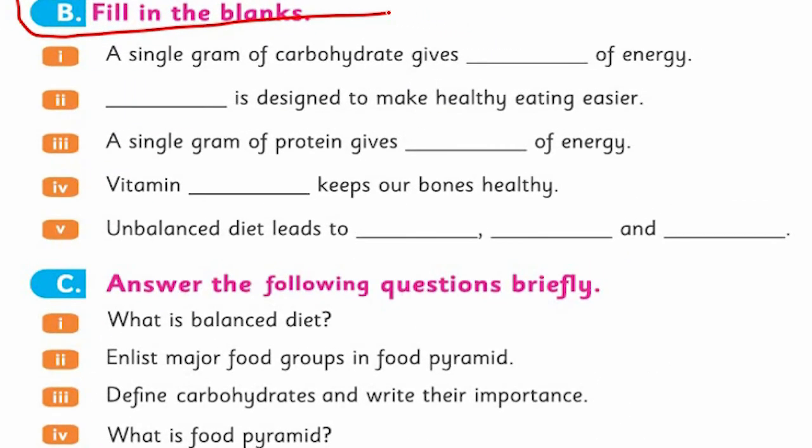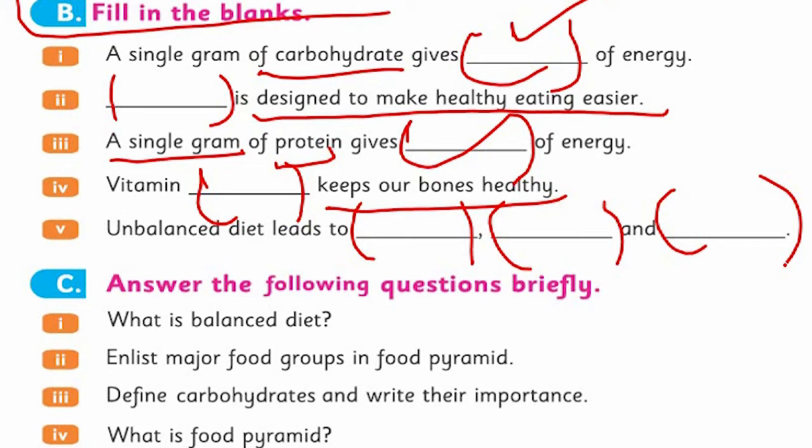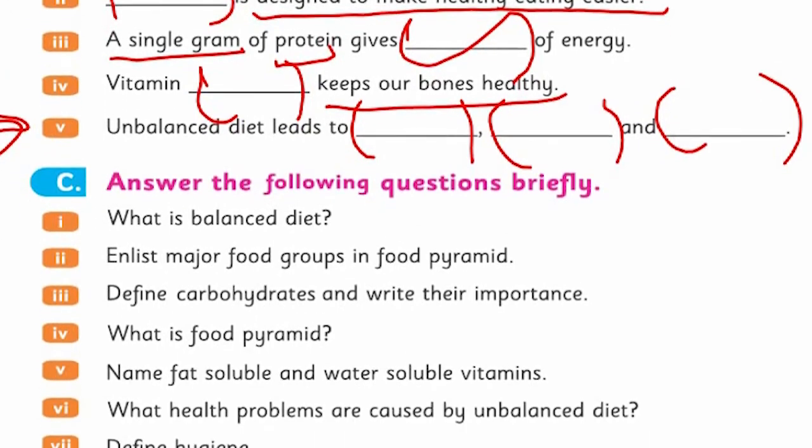Coming towards the next topic - fill in the blanks. This is also very easy, not difficult for you. The same things you read there. How much energy does carbohydrate give? What did we make for healthy eating? Single gram of protein - carbohydrate was above, how much does protein give? What do vitamins do? I told you in detail. Three disadvantages of unbalanced diet - look at balanced diet on the next page.